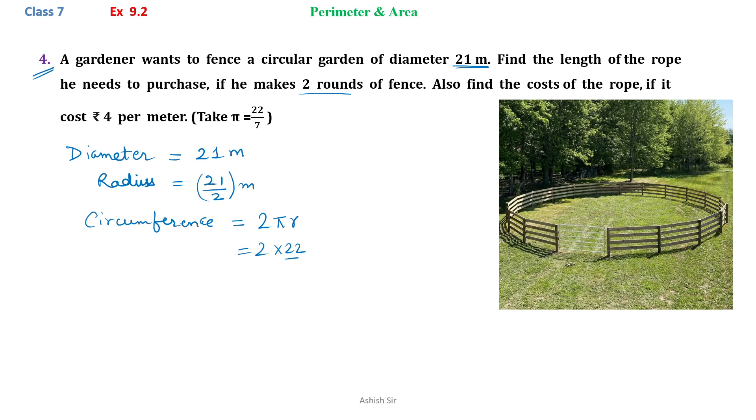Now the value of pi, 22 by 7, radius 21 by 2. We see that we can cancel 7, 3s are 21. So 66 meter is the circumference.